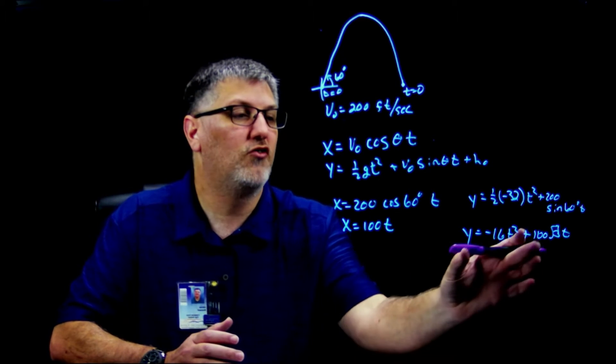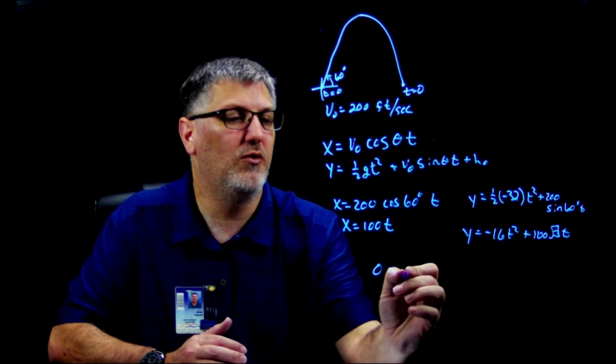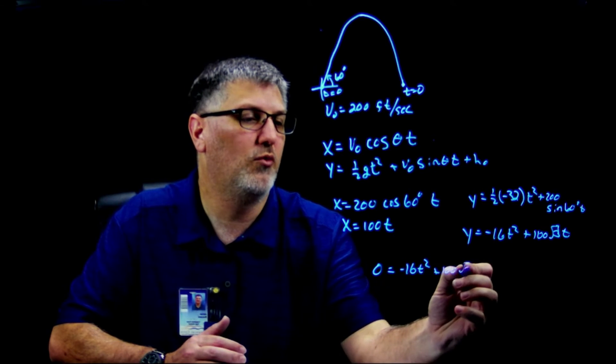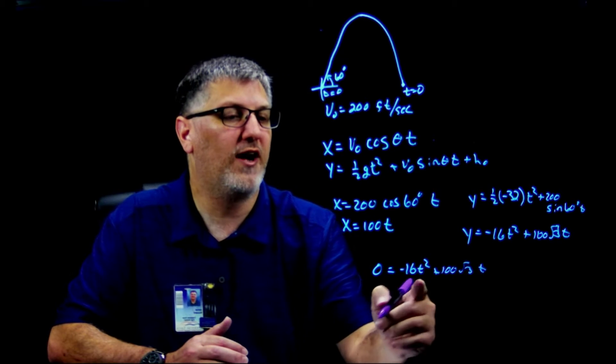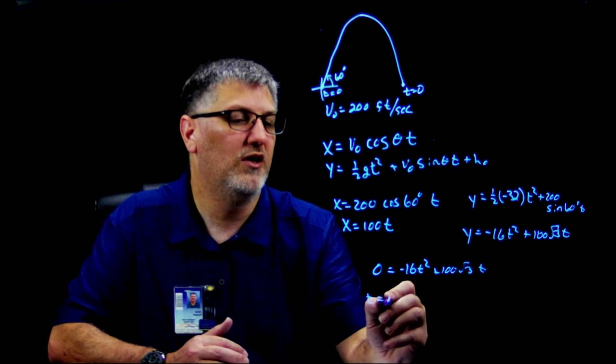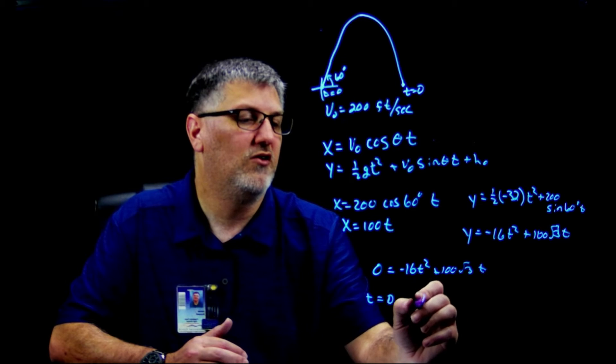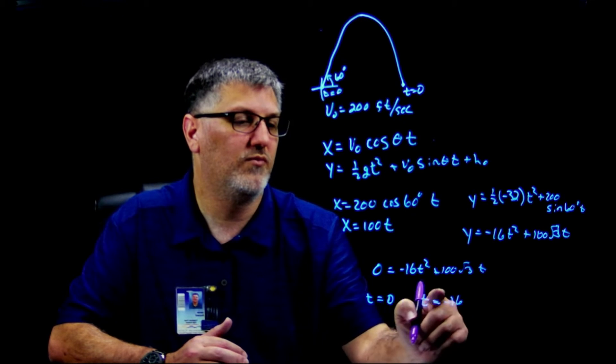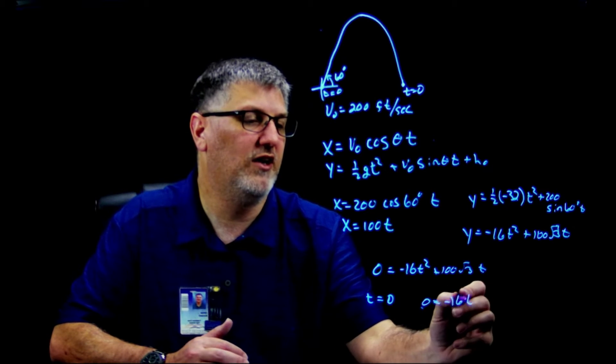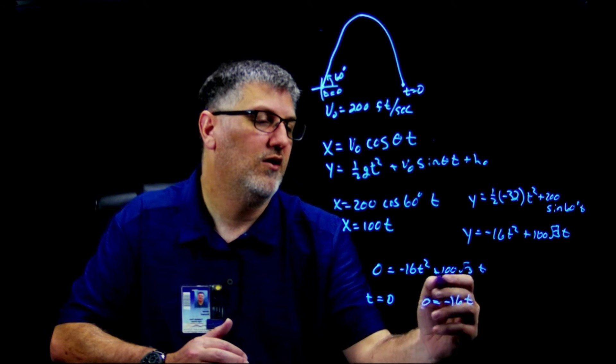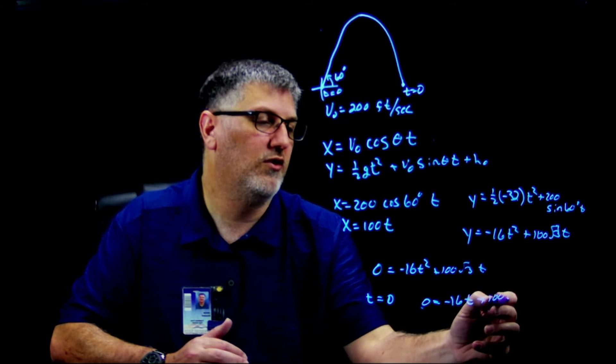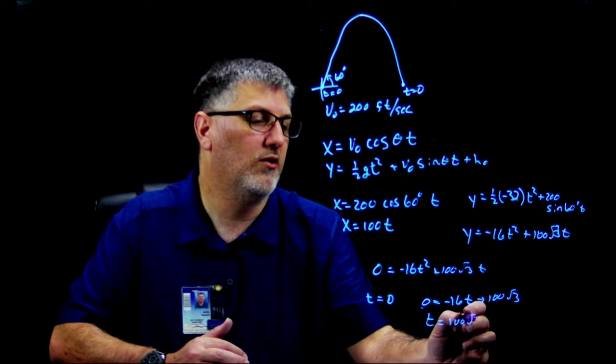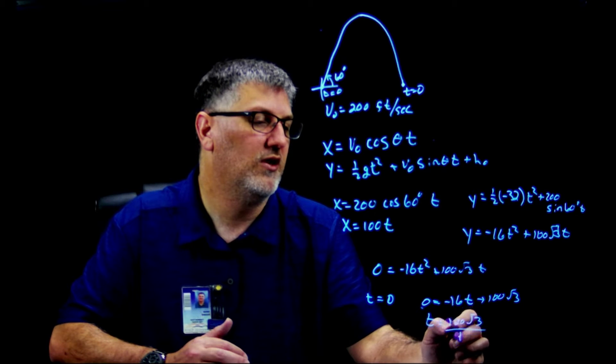I would do 0 = -16t² + 100√3 t. Factor out the GCF, you're going to get t = 0, and then 0 = -16t + 100√3. Therefore t is going to be 100√3 over 16.